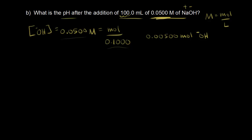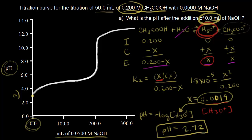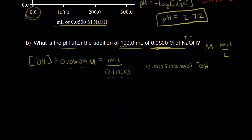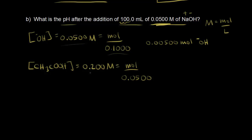Now let's find how many moles of acetic acid we originally had. We started with 50 mLs of 0.200 molar acetic acid. Using molarity = moles/liters: 0.200 × 0.0500 liters = 0.0100 moles of acetic acid.